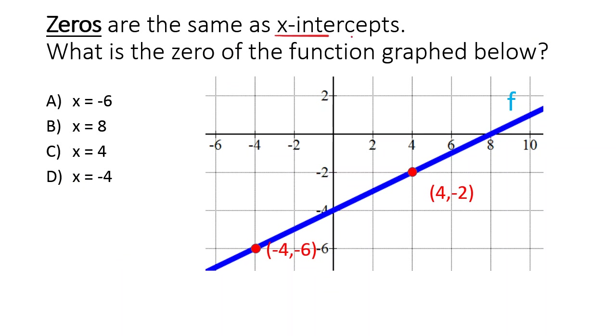Notice we're asking for the x-intercept this time. So our x-axis is here. Our y-axis is here. If we follow the blue line along to where it hits the x-axis, it hits the x-axis at 8. That means the 0 is 8. It's the exact same thing as the x-axis intercept. That's the 0 of the function.